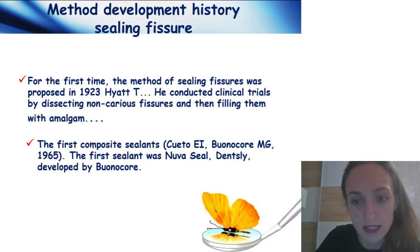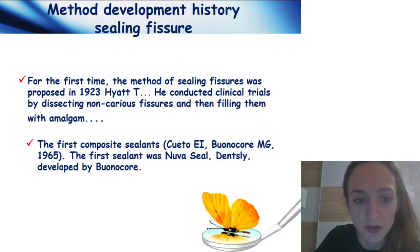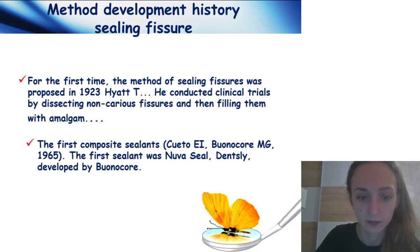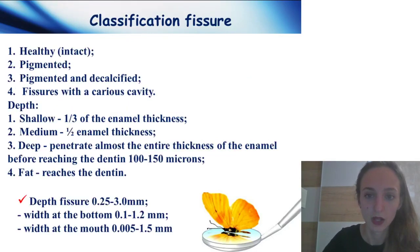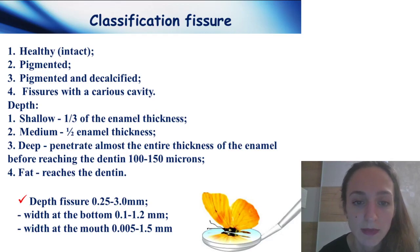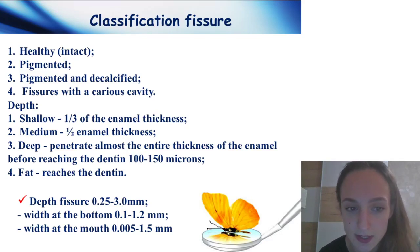For the first time, the method of sealing teeth was proposed in 1923. Clinical trials were conducted dissecting non-carious fissures and filling them with amalgam. The first composite sealant appeared in 1965. Classification of fissures: healthy or intact, pigmented, and decalcified fissures with a carious cavity.